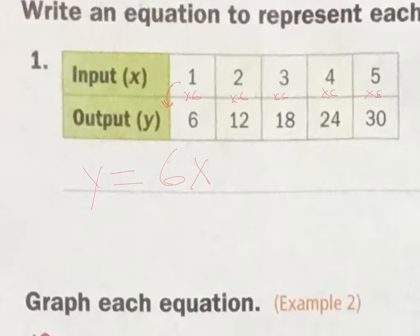Okay, whatever x is. So in this case, it's two. So x is two. I put that in my equation here. Two times six is 12. So my output would be 12, which is what it shows on the chart.